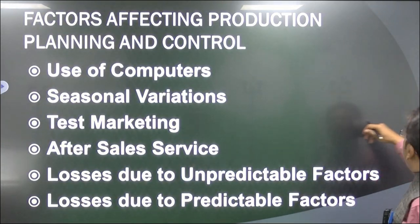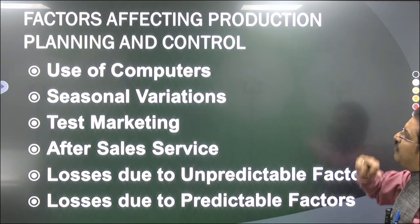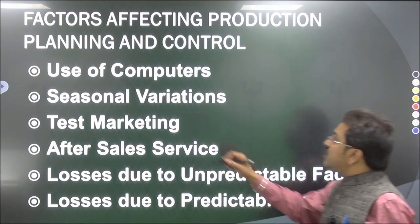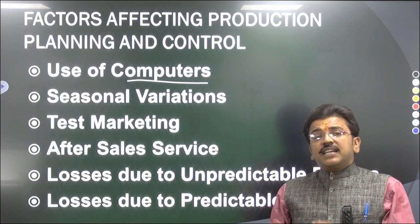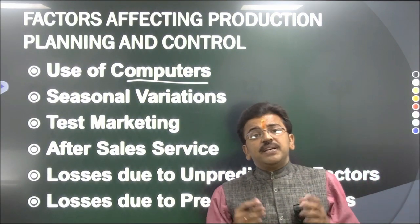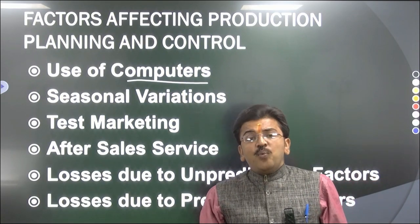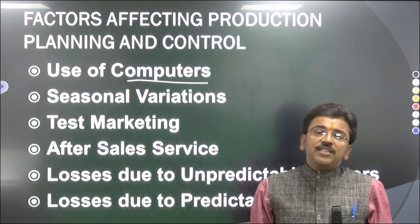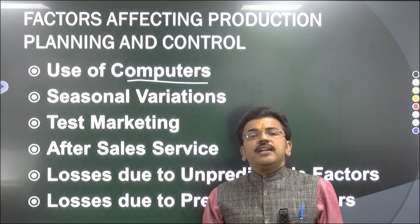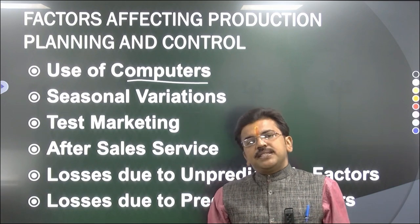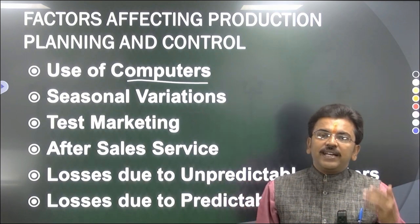Now let's see what are the factors affecting Production Planning and Control. The first factor is use of computers. By the help of ICT we can see how to get the best layout, how to purchase raw material, how to utilize human resource management, what are the budgets, and how to put our finances into the business. The use of computers has helped human beings get the best output.